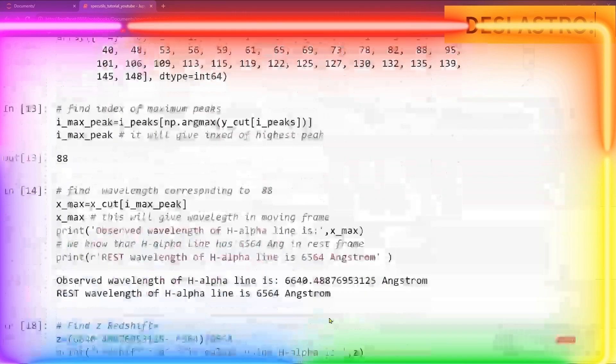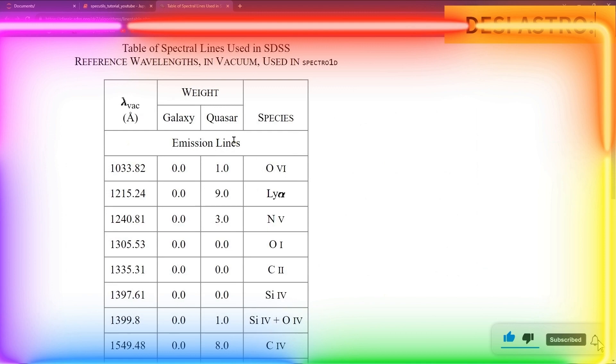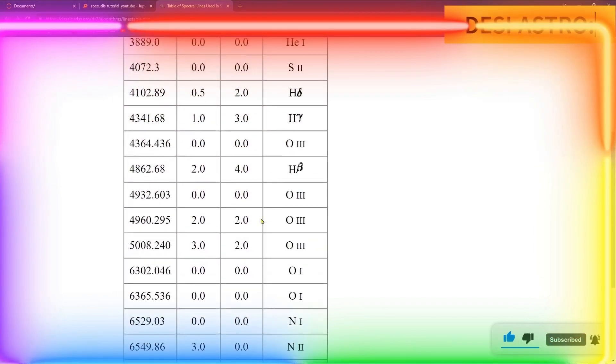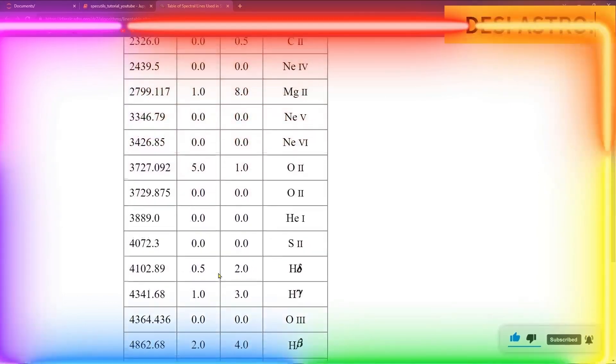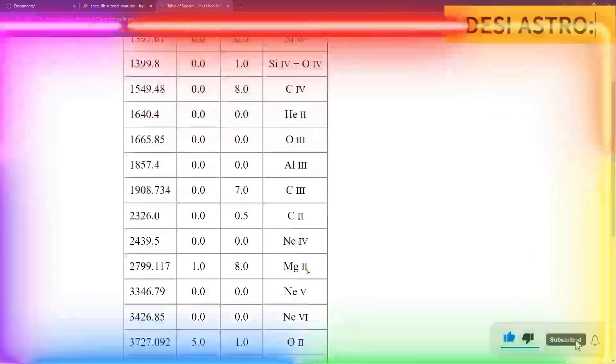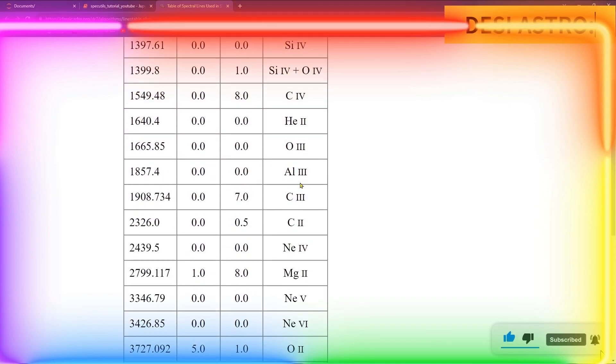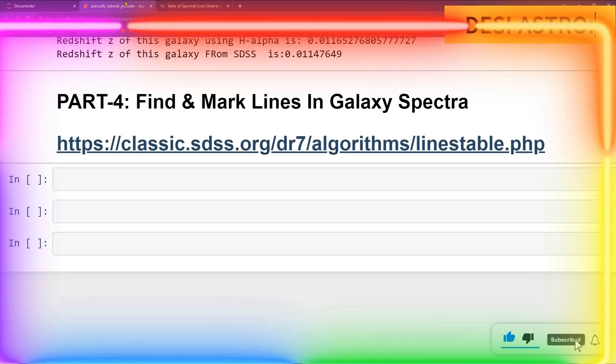So for doing that, here I have a link which contains the spectral lines in the rest wavelength or in the lab frame. So let's click it and open it. Here you can see that it contains lines of the galaxy and quasar. Suppose I want to go for H-alpha line. This is my H-alpha line and its rest wavelength is 6564 angstrom. Similarly we have O3 lines, O2 lines, and N2 lines. This table will be helpful for finding what is the rest wavelength of any spectral line of the element.